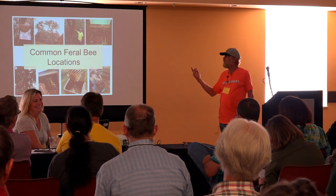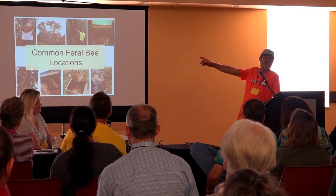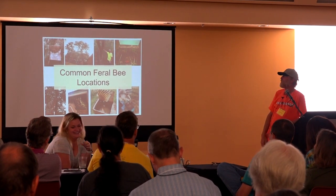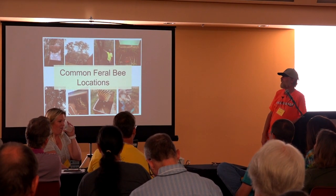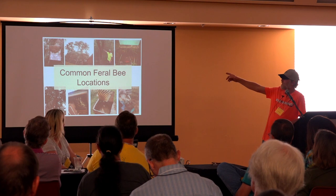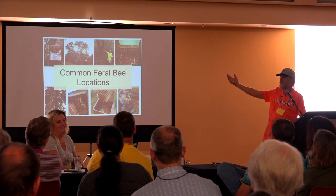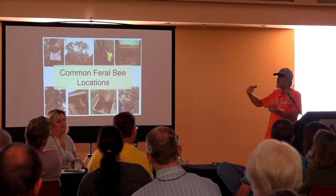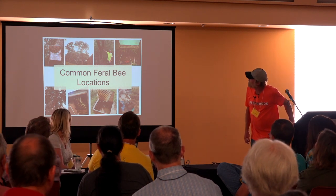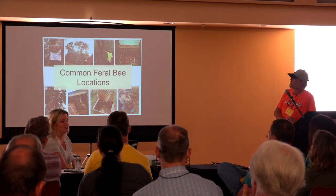Some of the locations we find bees: there's an owl house over on the left — birdhouse removals are some of the simplest ones, sometimes not. There's a dairy barn removal. And in the center, that's what I call a fillet tree, where we open the tree up and remove the bees — that's for cases where the tree is coming down. Also inside the eaves of homes.